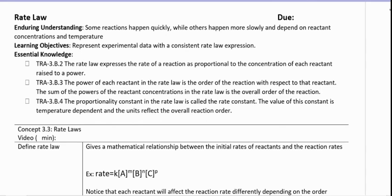Three pieces of essential knowledge will help us do that. One, the rate law expresses the rate of a reaction as proportional to the concentrations of each reactant raised to a power. Two, the power of each reactant in the rate law is the order of the reaction with respect to that reactant, and the sum of these powers is the overall order of the reaction. Three, the proportionality constant in the rate law is called the rate constant. The value of this constant is temperature dependent, and the units reflect the overall order of the reaction.